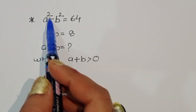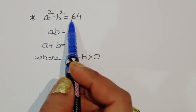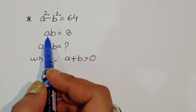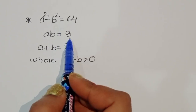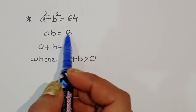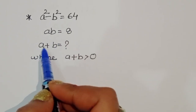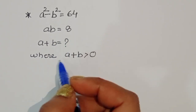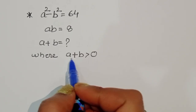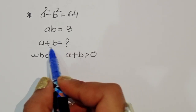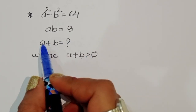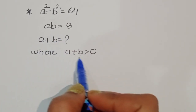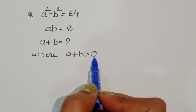The question is: given a² - b² = 64 and ab = 8, we have to find the value of a + b, with the condition that a + b is greater than 0. Whatever solution we get, that value must be greater than 0.